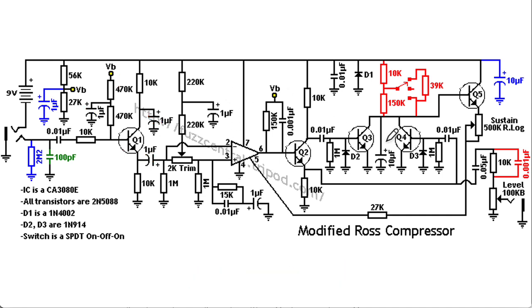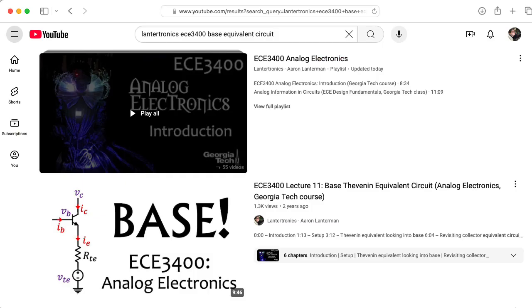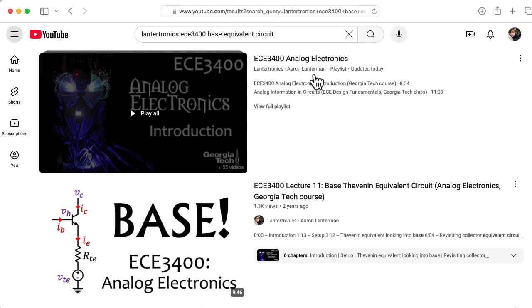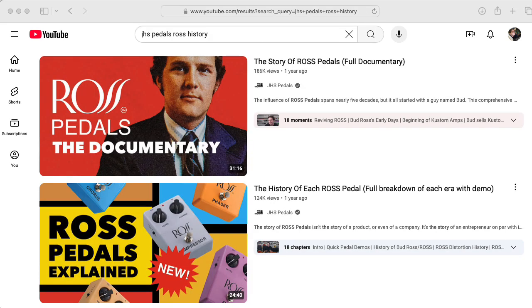If there's any part of the circuit you would like me to go into in more detail, leave a comment below. Or if there's other interesting pedal circuits you think I should take a look at, leave a comment below. If you're wondering where that RIB formula for the resistance seen looking into the base came from, you can check out this lecture titled Base Thevenin Equivalent Circuit from my EC3400 analog electronics class. And I highly recommend you check out these videos, JHS Pedals made, about the story of Ross Pedals.